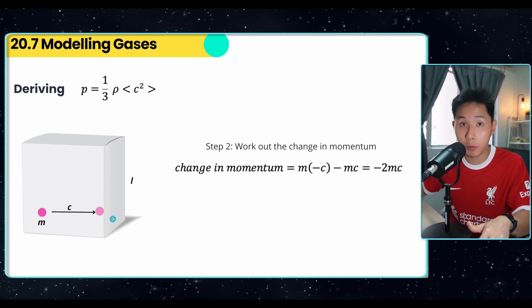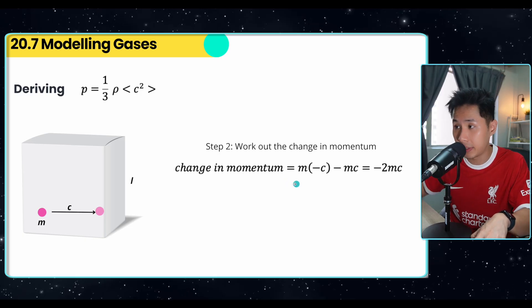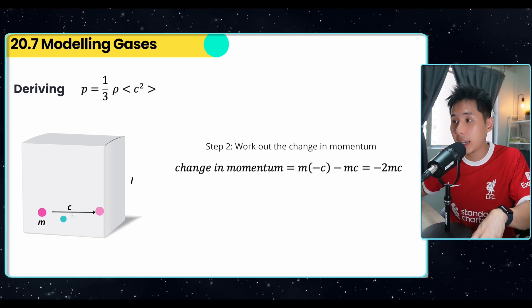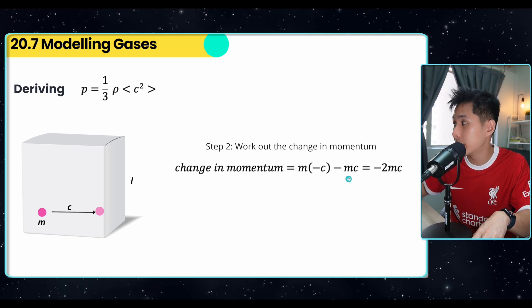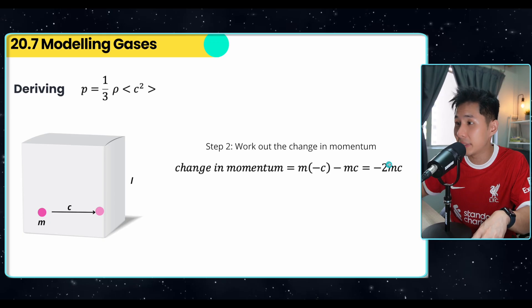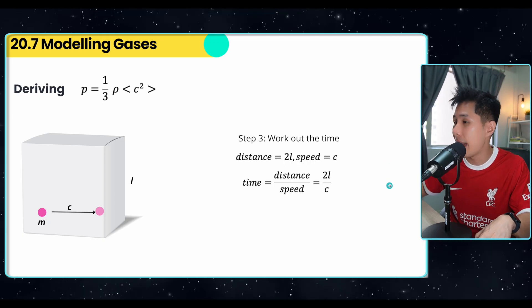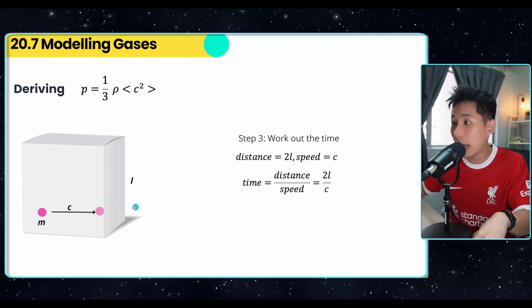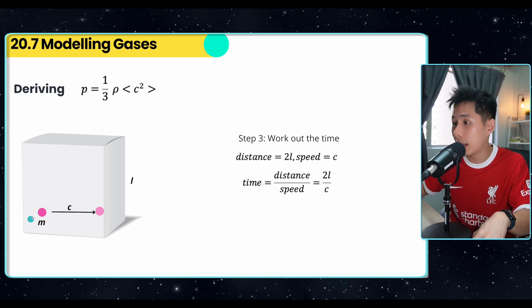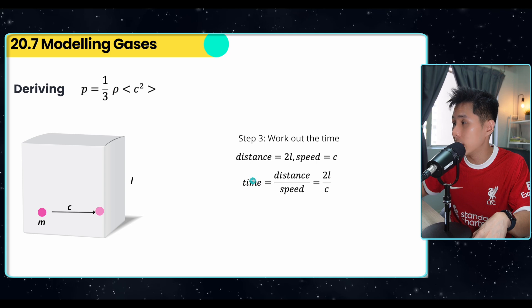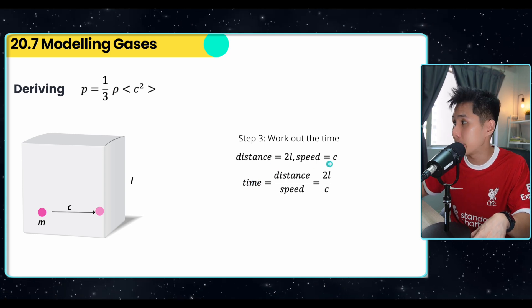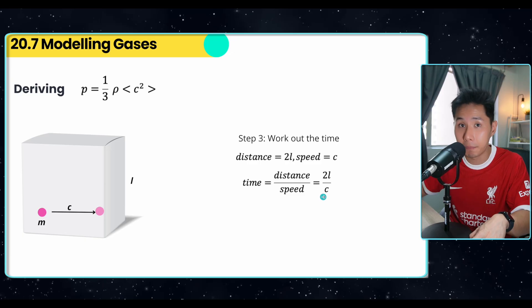So first, once the particle collided with the wall, we can calculate the change in momentum, the initial momentum is mc, the final momentum is negative mc. So I'm using negative mc minus mc. So we have negative 2mc as the change in momentum. And after that, I'm going to work out how much time it takes. So the distance that it will travel is from here, collide, and come back again. So we assume that the distance is 2L and the speed is c. With that, we can find out the time.